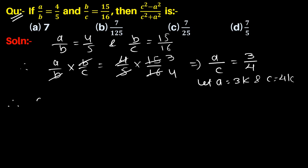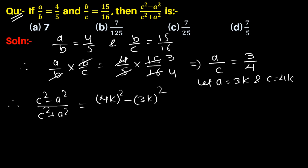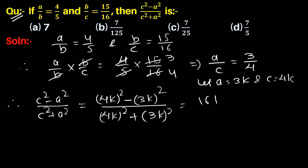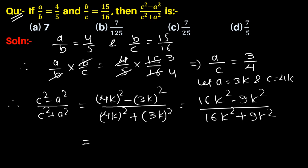So c squared minus a squared upon c squared plus a squared is equal to 4k whole squared minus 3k whole squared upon 4k whole squared plus 3k whole squared. This equals 16k squared minus 9k squared upon 16k squared plus 9k squared, which equals 7k squared upon 25k squared.